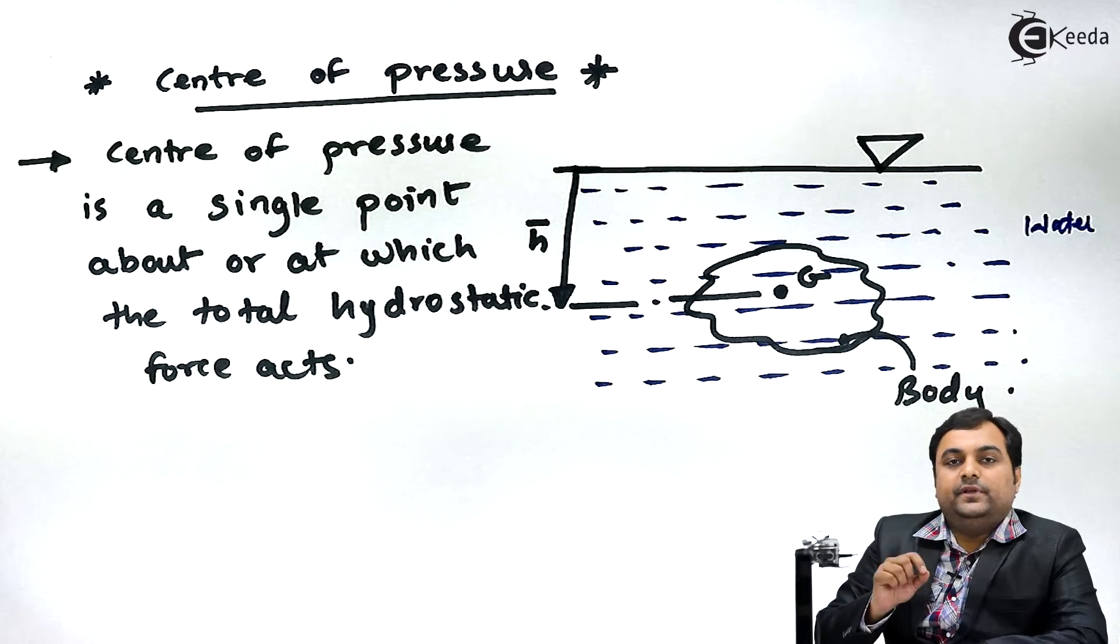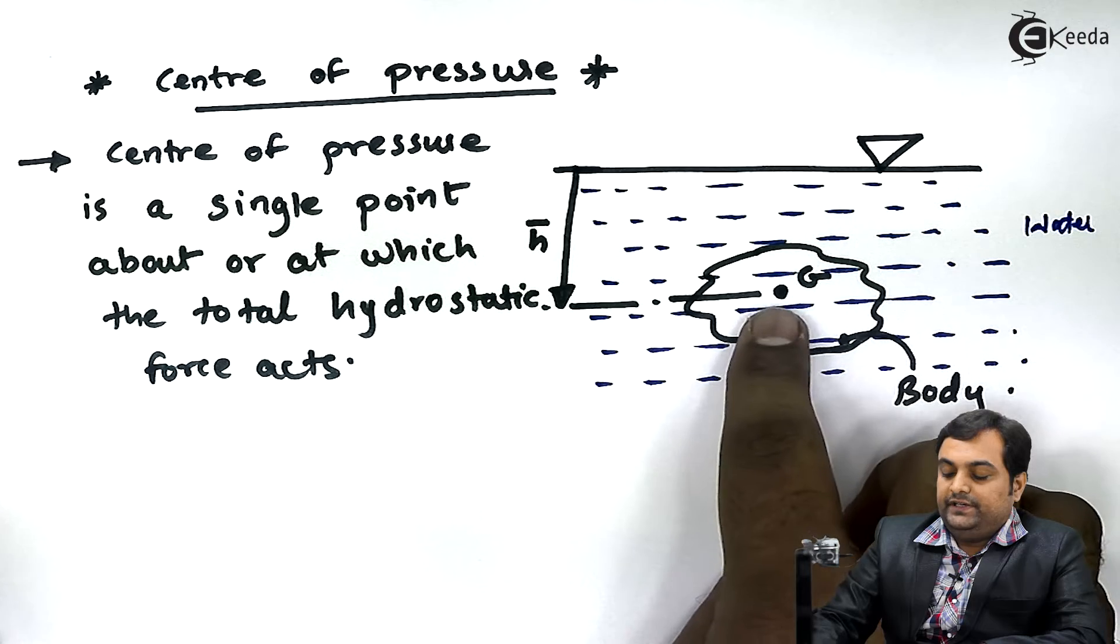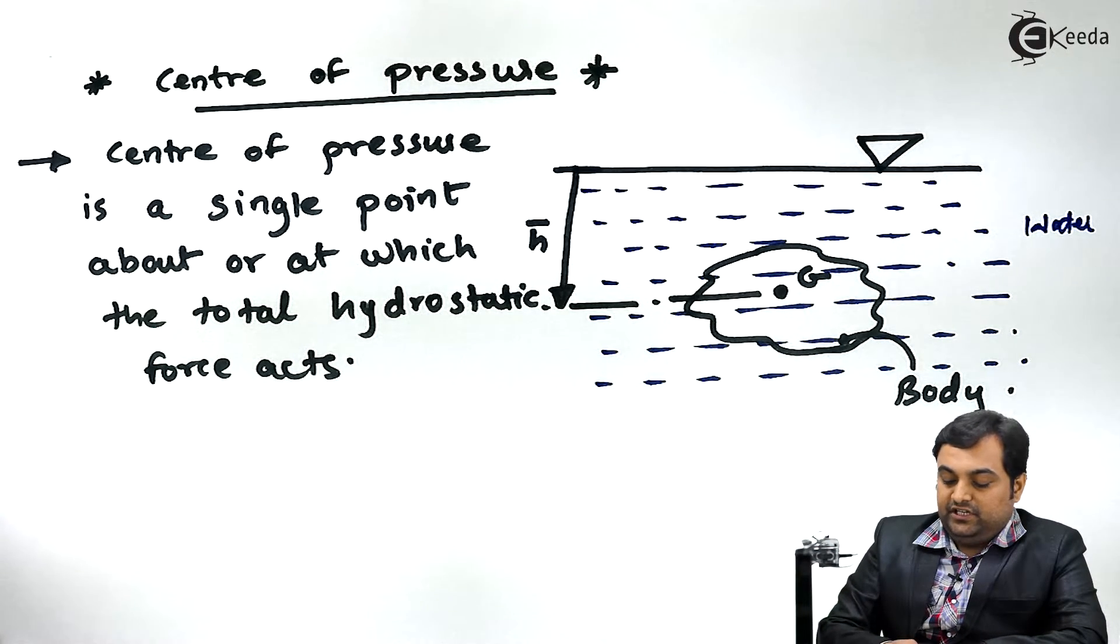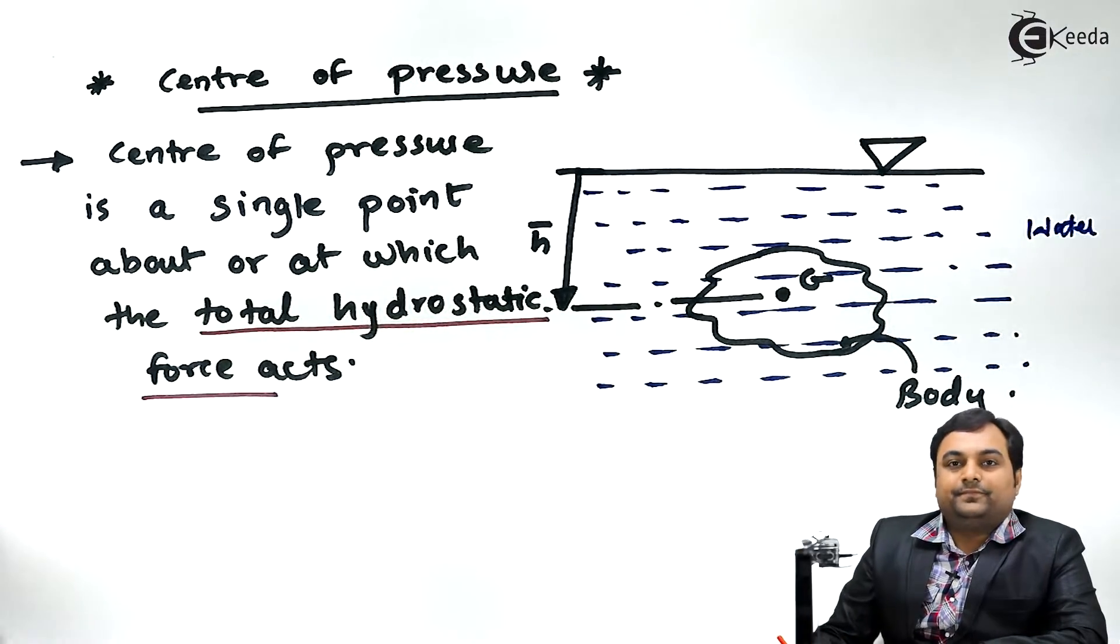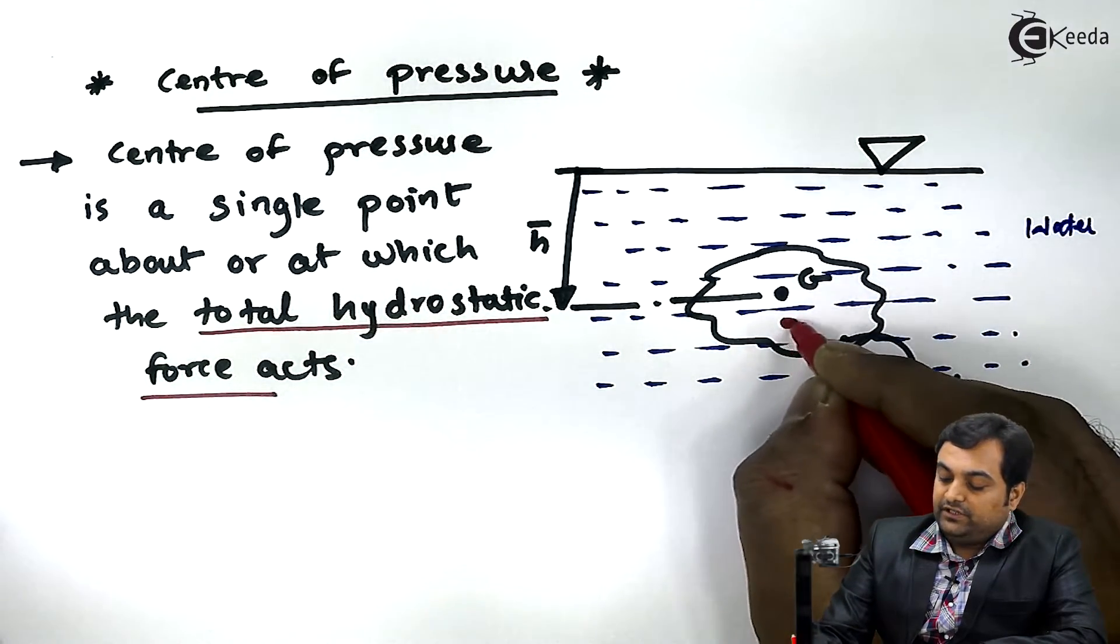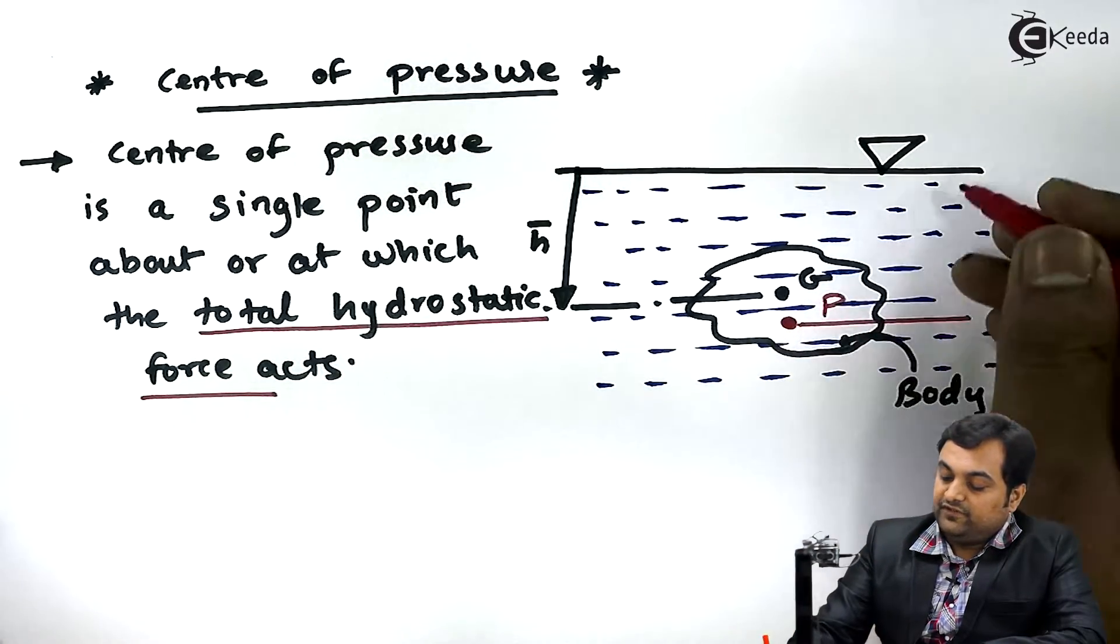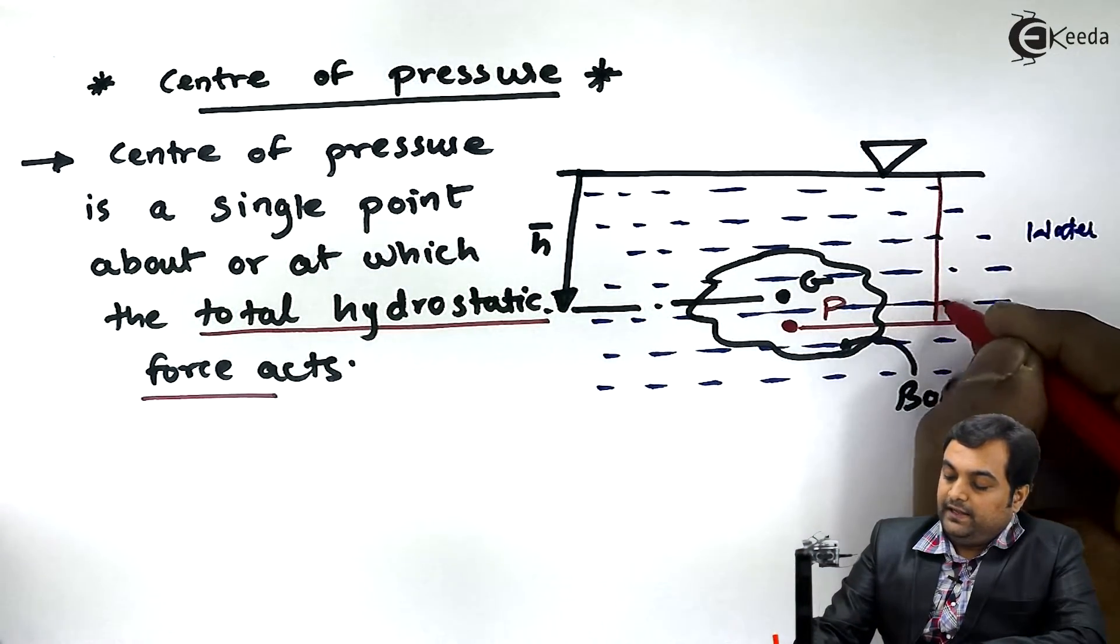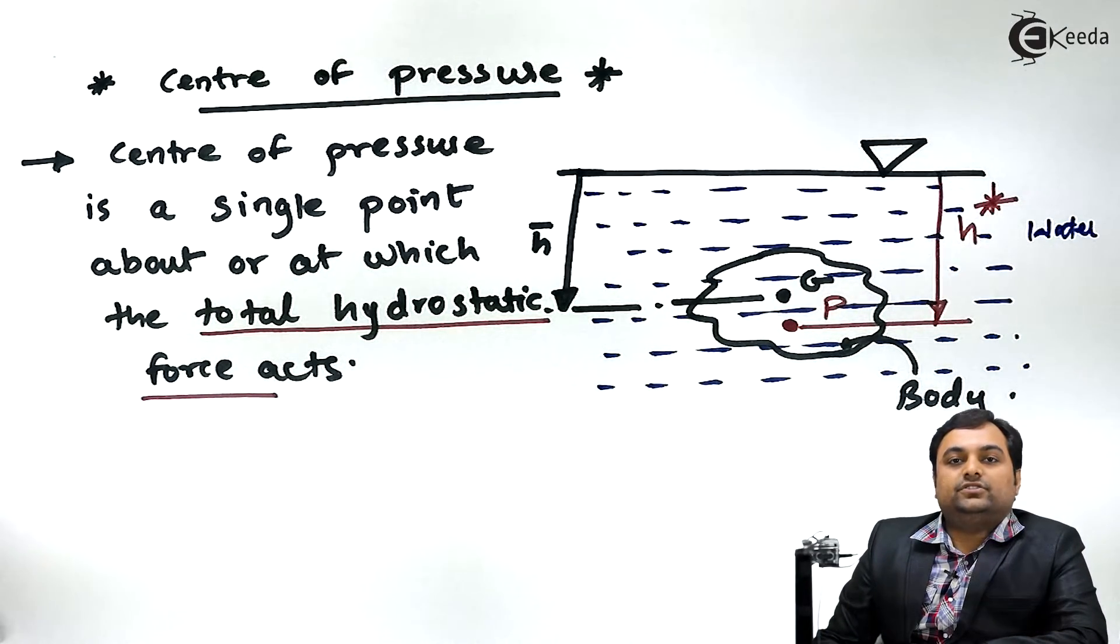So center of pressure means it will be a single point, like centroid is a single point where the weight is acting. Since I have denoted centroid by G, I will denote the center of pressure by letter P, and its distance from the free surface I'll denote by H star.